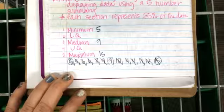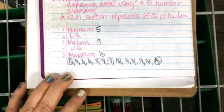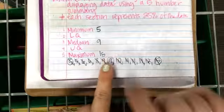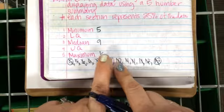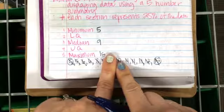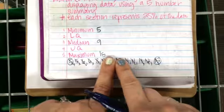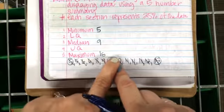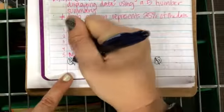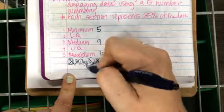For the lower quartile: it's the median of the data below the median. I do not include the nine that I circled as the median. If there were two values in the middle, I would include them — but since this nine is the actual median, I exclude it. Looking at the lower half, I have two sixes in the middle, so the lower quartile is six.